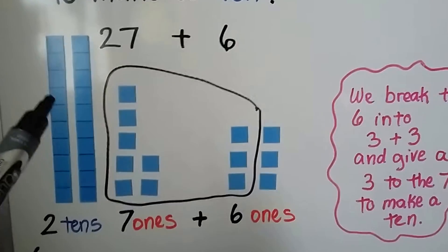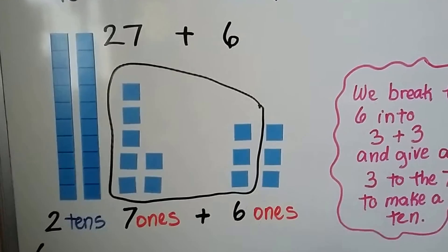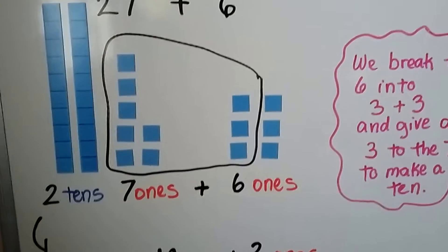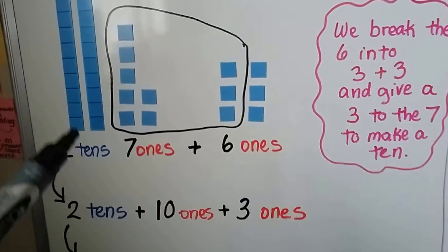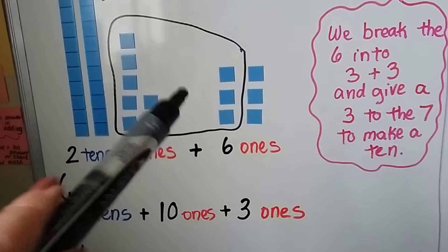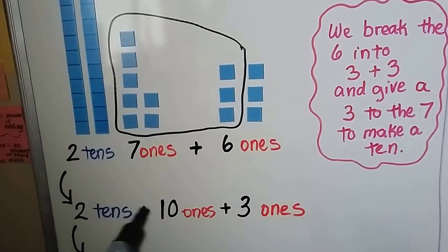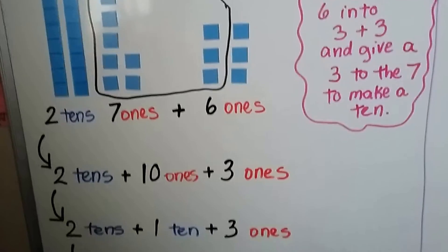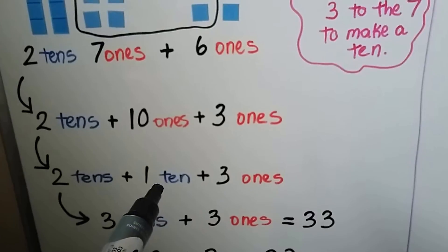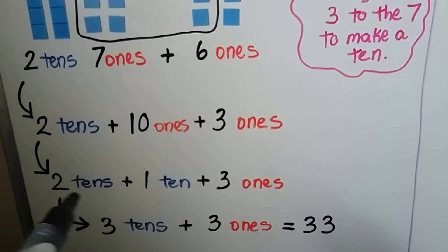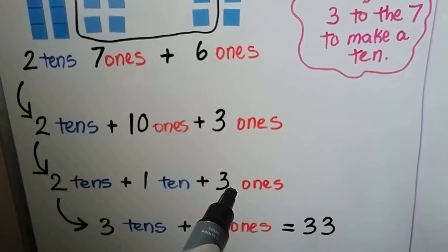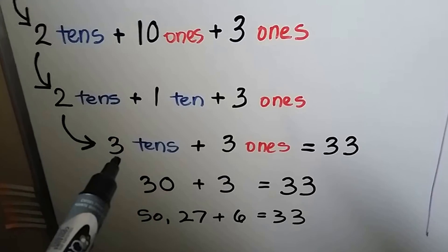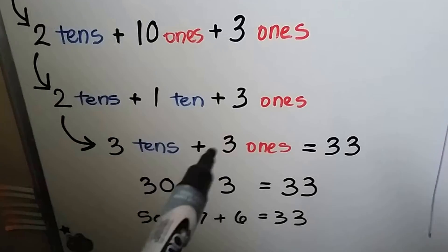We can give these three to this seven to make another ten. Now we have, instead of two tens and seven ones plus the six ones, we have one, two, three tens plus three ones. We made a ten here with ten ones. So now we have two tens, ten ones inside of our circle, and the three ones that are left over. We know that ten ones makes one ten. Now we have two tens and one ten and three ones. Two tens and one ten are three tens.